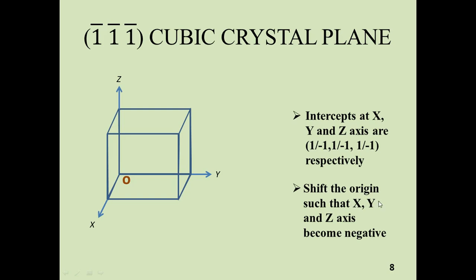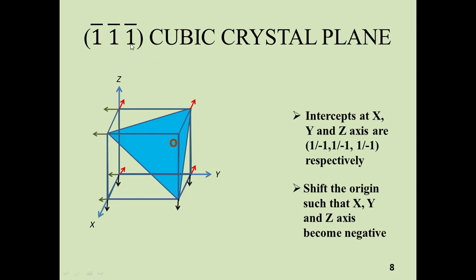Drop the origin from this position; our new origin is this one. When you move in this direction, this is the negative y-axis; in this direction, this is the negative z-axis; and in this direction, this is the negative x-axis. The four negative x-axis directions are identified, as are the four negative y-axis and four negative z-axis directions. This time you get three types of corners: one corner has three arrows, three corners have two arrows, and three corners have a single arrow. Join the corners which have a single arrow and you get a triangle — that is your (1̄1̄1̄) cubic crystal plane.